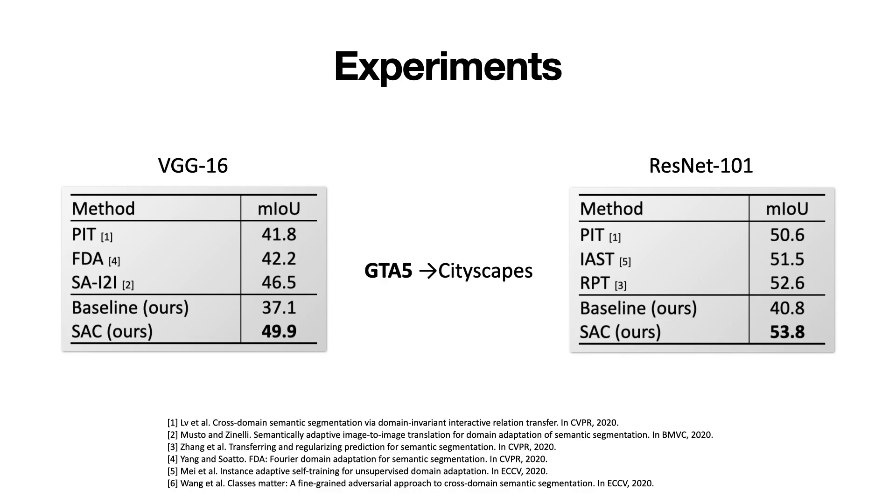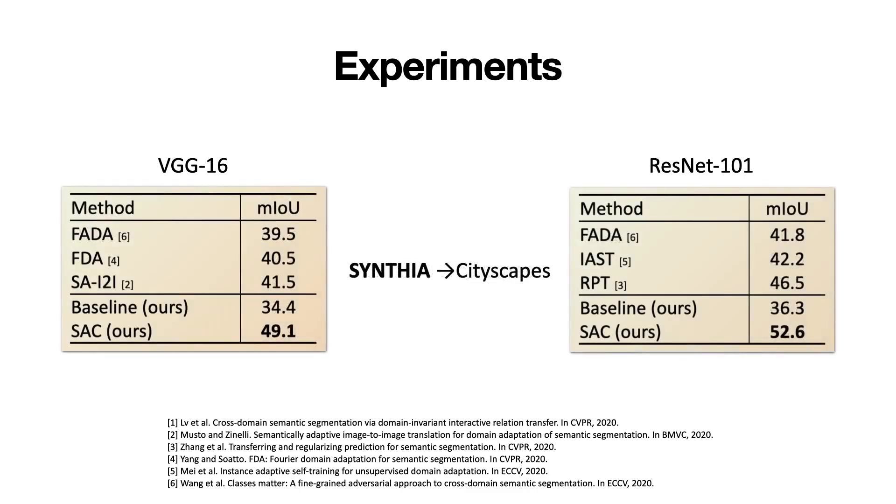Quantitatively, we significantly improve state-of-the-art accuracy of semantic segmentation in terms of mean intersection over union, even compared to the methods with significantly higher training complexity. This result is consistent both across the backbones we used and the synthetic dataset we used as the source data.